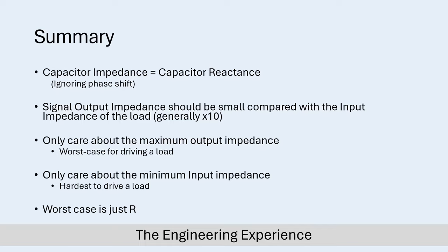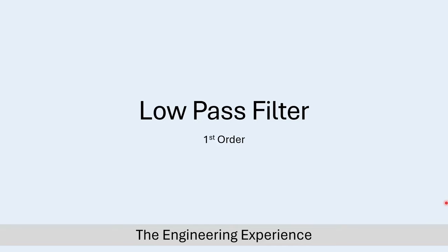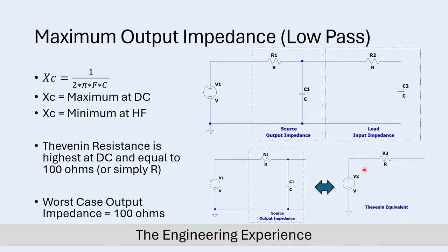I'll first go through low-pass filters and then high-pass filters, and you'll see we reach the same conclusion for both cases. For the low-pass filter solution, we need to calculate the maximum output impedance and the minimum input impedance. The paragraph above the question talks about a source RC filter driving a load RC filter, and this is the circuit shown in the diagram.